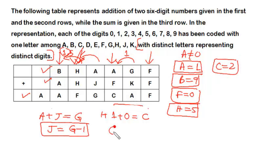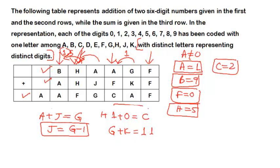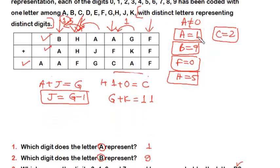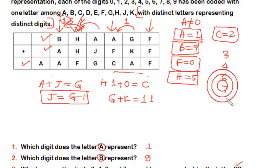Looking at the column where G plus K ends with one (which is A): since the result must have unit digit one, G plus K must equal eleven, with a carry of one going forward. We have now used digits zero, one, two, five, and nine. The remaining digits available to assign to G, J, K, D, and E are: three, four, six, seven, and eight.